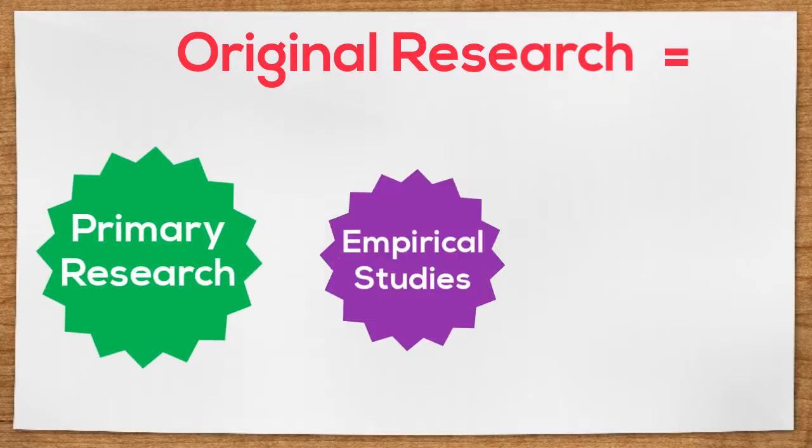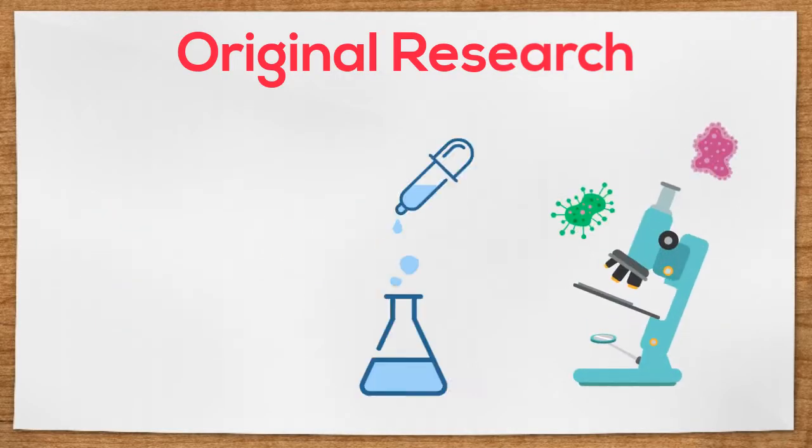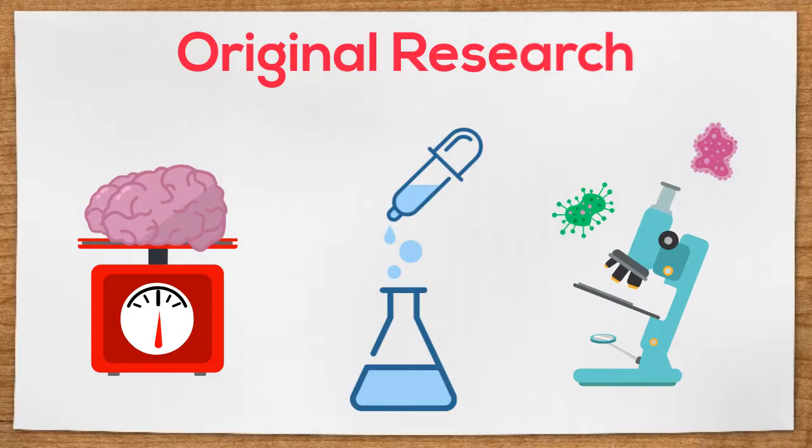Original research articles, which are sometimes referred to as primary research, empirical studies, or primary sources, describe studies, experiments, or research conducted by the authors.